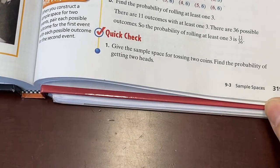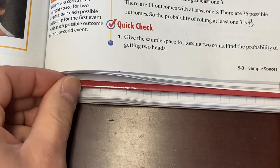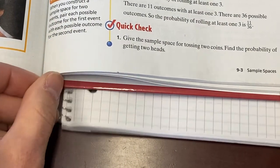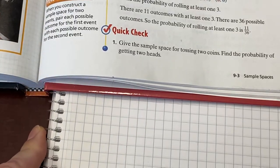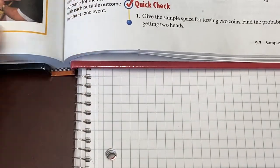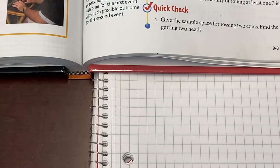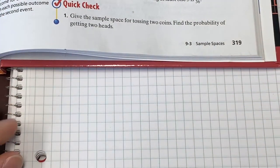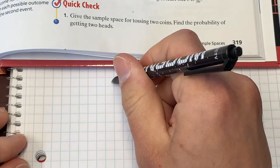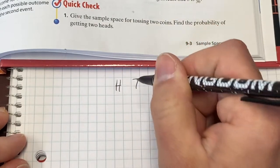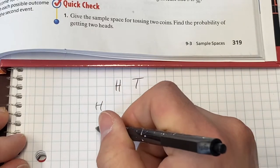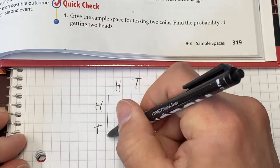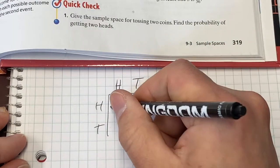Quick check number one here says give the sample space for tossing two coins. Find the probability of getting two heads. This is going to be super easy. Two heads. That's going to be easy. Our table is going to have heads, tails along the top for the first coin. Heads, tails down the side for the second coin. And now we just pair them up.